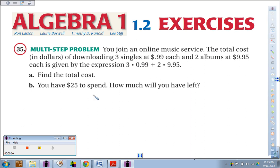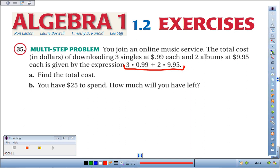In number 35, we join an online music service. The total cost in dollars of downloading three singles at $0.99 each and two albums at $9.95 each is given by this expression. We're supposed to find the total cost, so we have to evaluate order of operations.